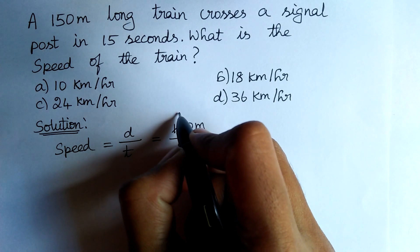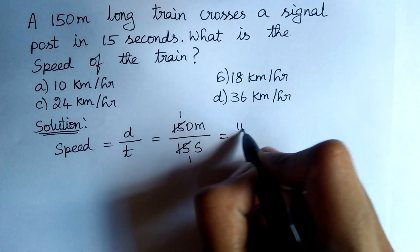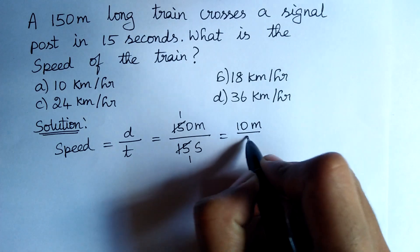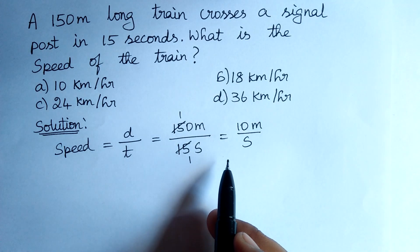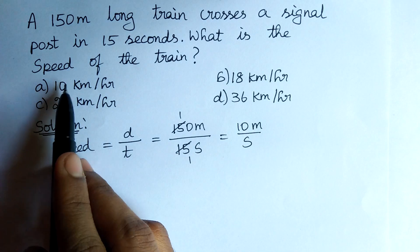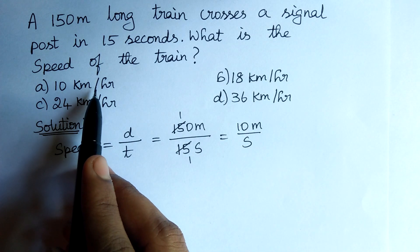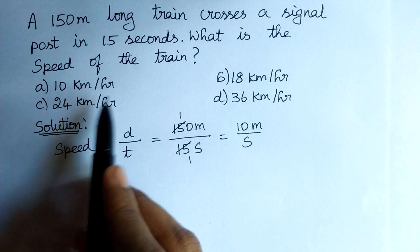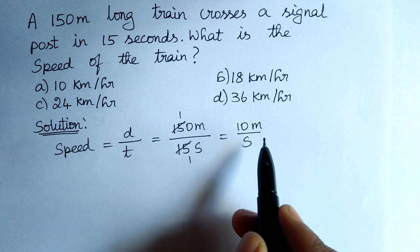Simplifying it, we get 10 meters per second. Some of them will immediately take the answer a, that is 10 km per hour. But it is not correct.